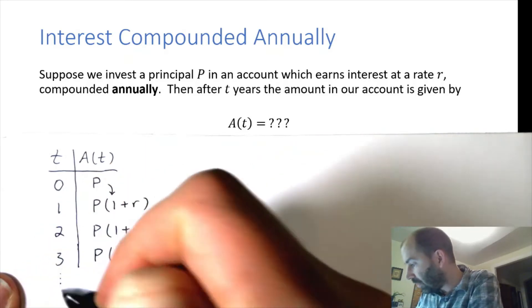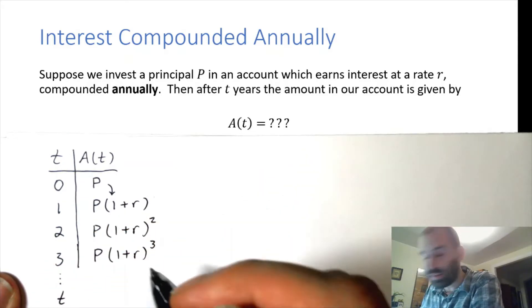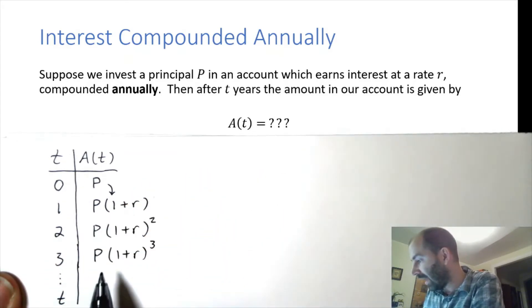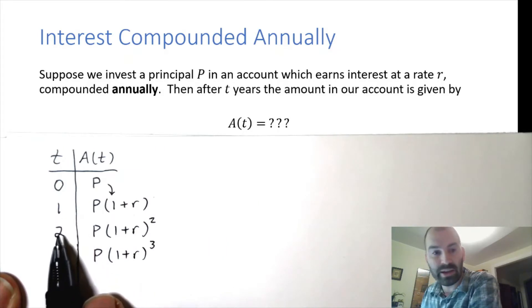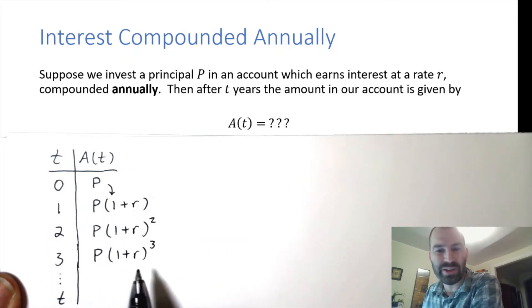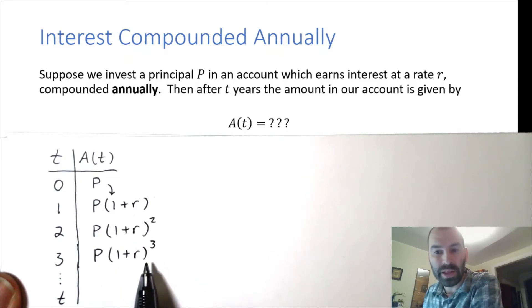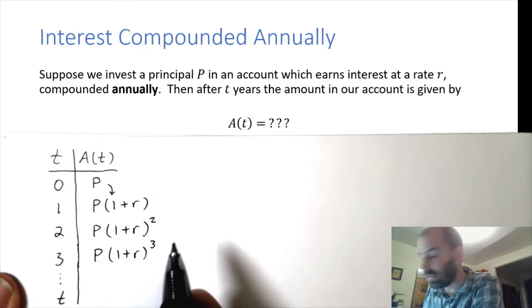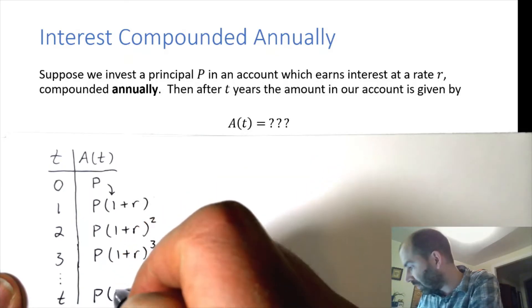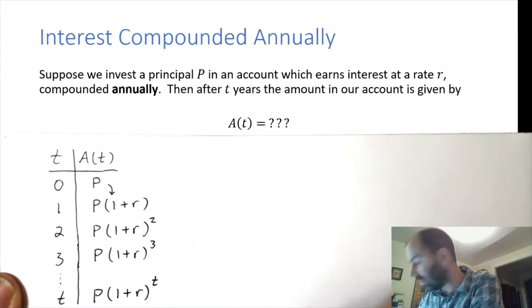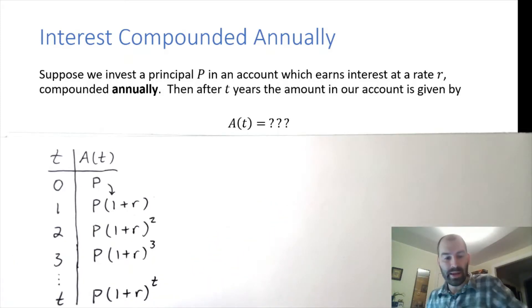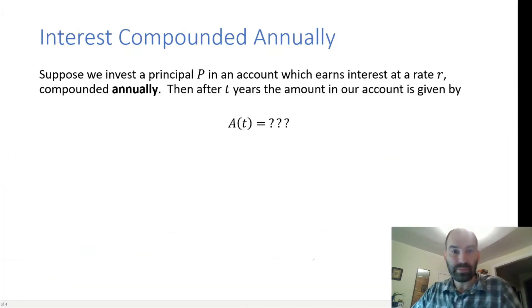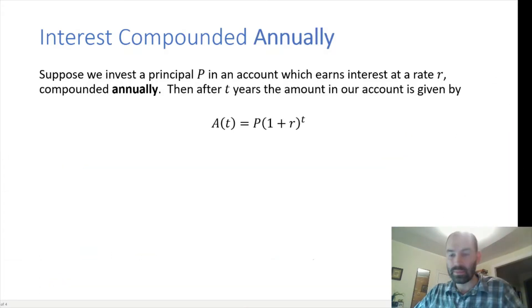Hopefully you can see the pattern here. After T years, the number of years is the number of times I've multiplied by (1 + R) — it's the number of times I've compounded my interest. So this ends up being P times (1 + R) to the power T. That is the formula for compounding annually.